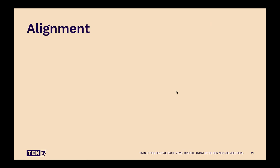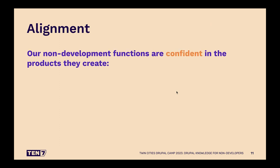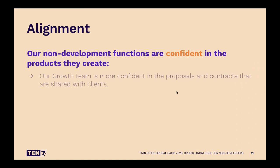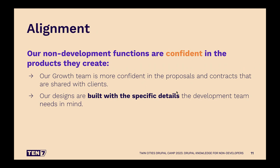The third pillar is alignment. Having our non-developer functions — everything from sales to user experience and design to development — all communicating in that same language allows them to feel confident in the products they're creating and handing to the development team to ultimately build. Our growth team feels more confident in the proposals and contracts because they have this knowledge and can understand what the scope is really looking to accomplish. Our designs are built with specific details that our development team needs, so there's no back and forth once designs reach development — they're created with that development need in mind.